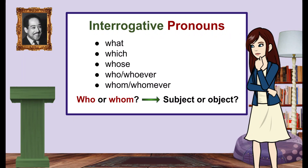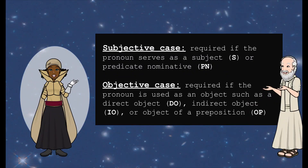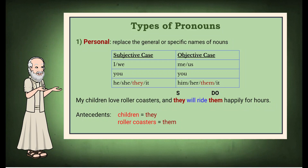'Who' and 'whom' look similar, so how do you know which to use? This is when you have to consider case — do you need a subject or an object? Pronoun case is determined by the purpose or the function of the pronoun in the sentence. The subjective case is required if the pronoun serves as a subject or as a predicate nominative, but the objective case is required if the pronoun is used as an object — direct object, indirect object, or object of the preposition. The same is true for the interrogative pronouns 'who' and 'whom' and 'whoever' and 'whomever.'